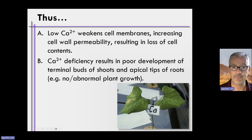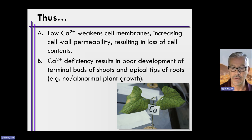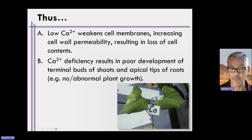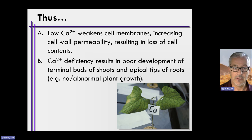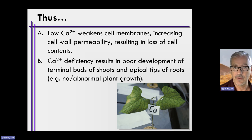When calcium is deficient, it results in poor development of terminal buds and shoots, as you can see in this picture. The terminal bud is either malformed or not growing at all. The same thing happens below ground at the apical meristem, at the tips of roots. When calcium is deficient, it also shows itself in terms of poor development on fruit, which we'll see in a minute.